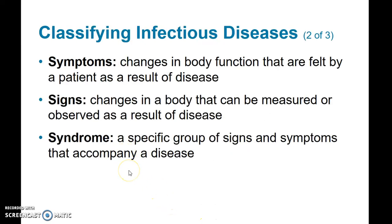We classify diseases by looking at symptoms, signs, and syndromes. Symptoms are changes in body function that the patient feels. Signs are changes in the body that are measured or observed, usually by a medical professional. A syndrome is the specific combination of signs and symptoms that go along with a particular disease.